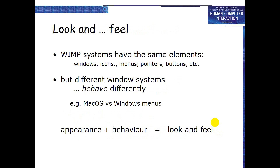The next property of interactivity is Look and Feel. WIMP systems — Windows, Icons, Menus, Pointers — have the same interface elements, but different window systems behave differently. For example, Mac OS and Windows both have icons and menus, but their appearance and behavior differ — this is look and feel.